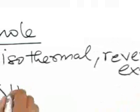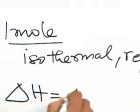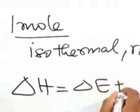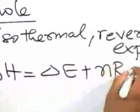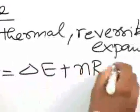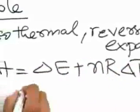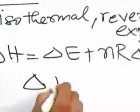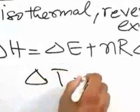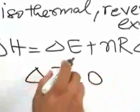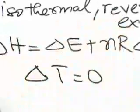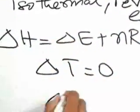We will consider this equation: delta H is equal to delta E plus nR into delta T. In an isothermal process, delta T is equal to 0, and for this reversible expansion delta E will be equal to 0.